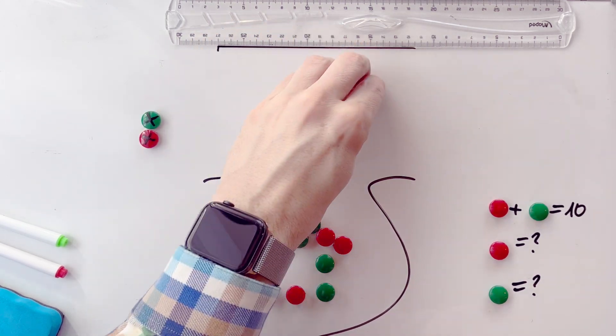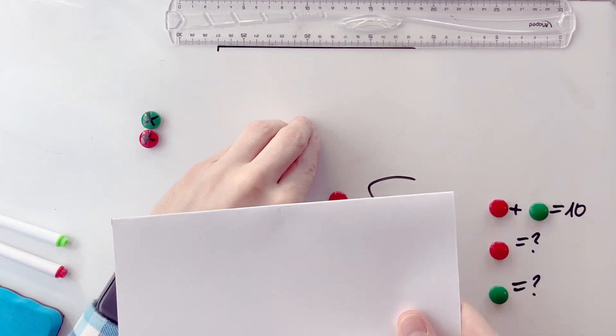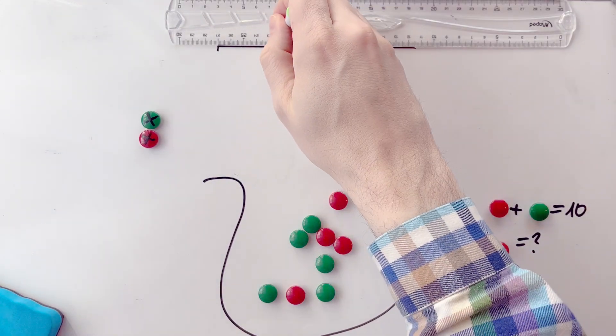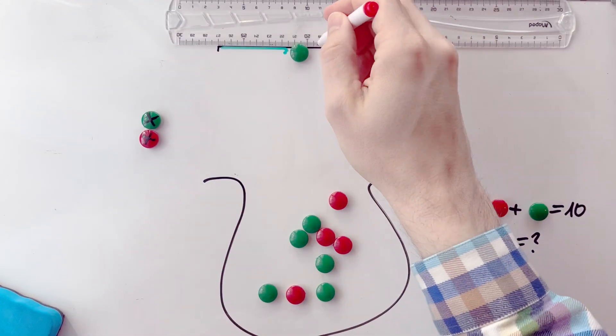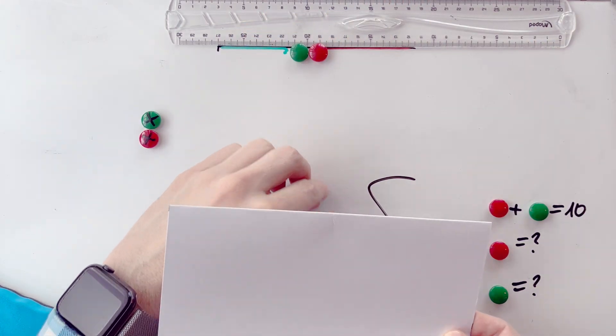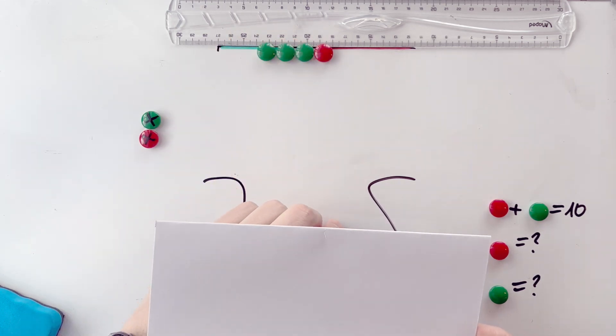But when you take out a ball, you don't see its color. You keep it hidden in your hand and decide where to place it before revealing the color. How in this situation can you arrange the green balls to the left and the red ones to the right of a row? You can place the ball anywhere in the row, but you can't peek at the color or change the order of the balls already placed.